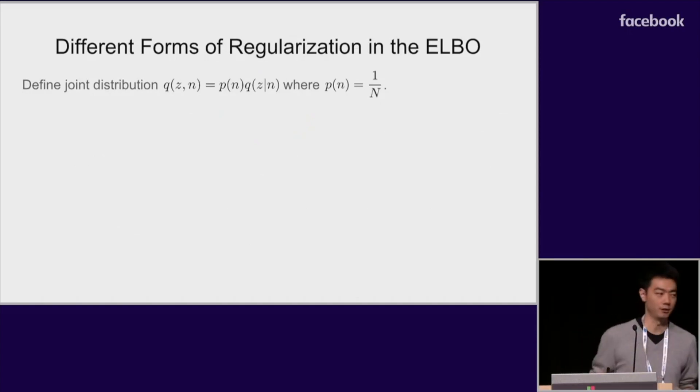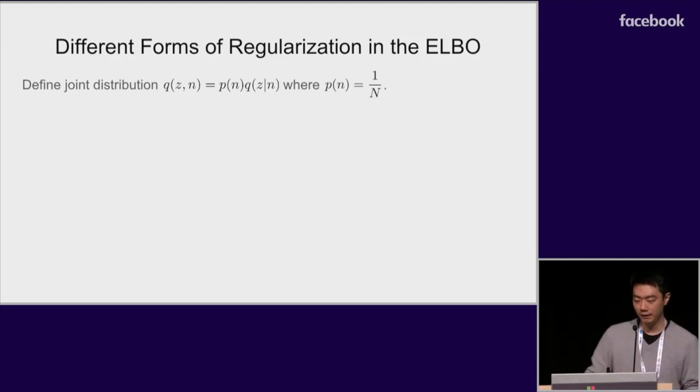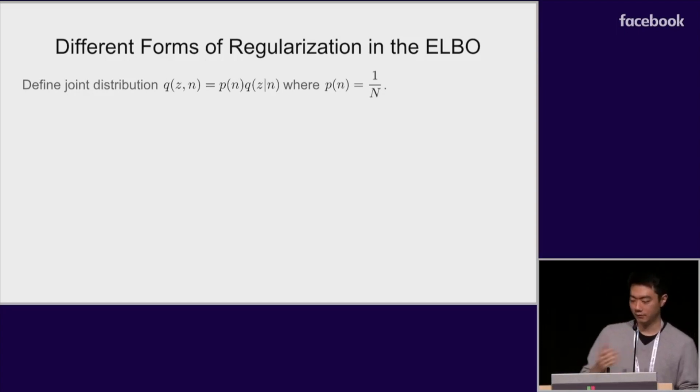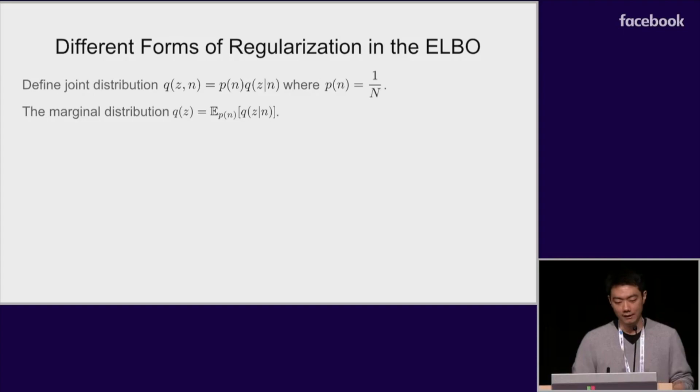So here's our first contribution. Let's define a joint distribution over the data samples and latent variables under the encoder distribution q. Here we take n to index an example in the training dataset and focus purely on this empirical distribution. So p(n) is simply one over the size of the training dataset. Based on this joint distribution, we put our focus on the marginal q(z) as it aggregates over the entire training set.